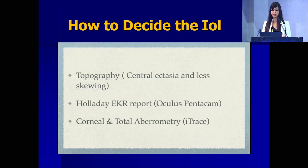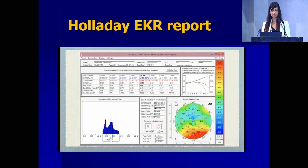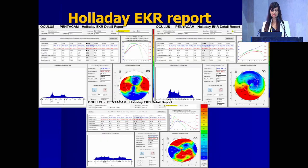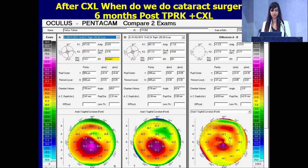Obviously you look at the topography and the EKR report to decide whether to choose a toric or not. If you see a regular pattern, it may be a good case for toric. But if you are seeing irregular spikes, it is not a good case for toric.